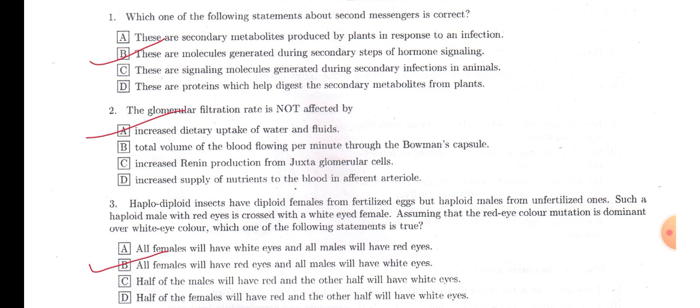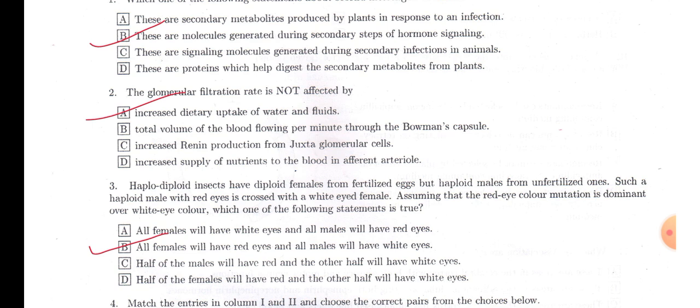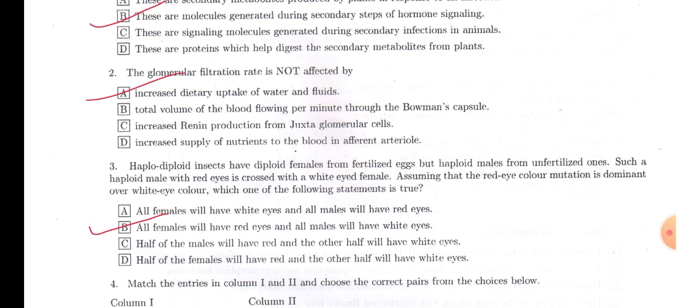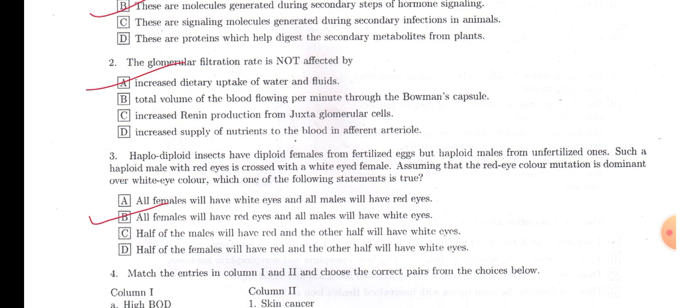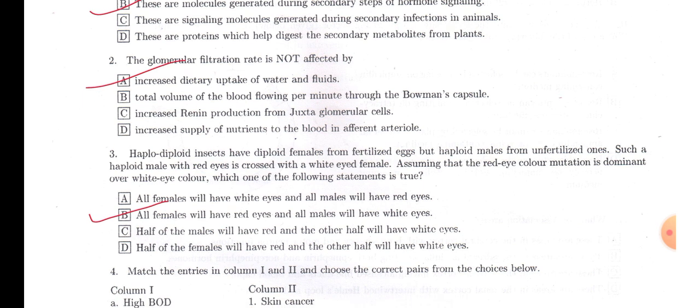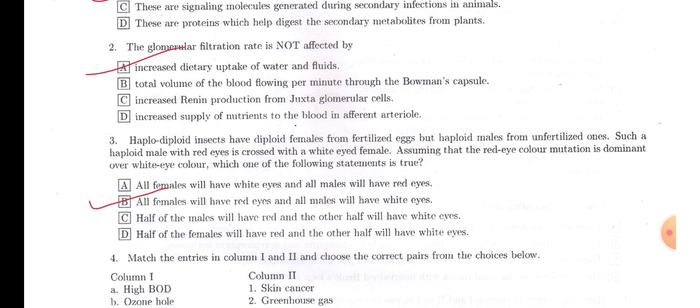The next question: the glomerular filtration rate is not affected by increased dietary uptake of water and fluids. If you take more water, you will form dilute urine. It will not affect the glomerular filtration rate, which is 125 ml per minute. It will remain the same.